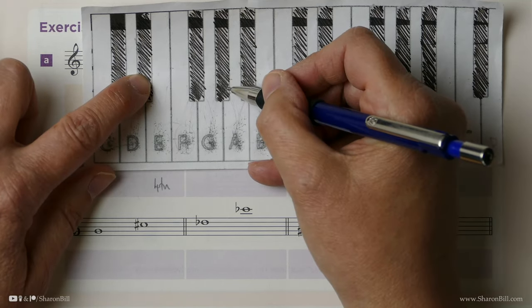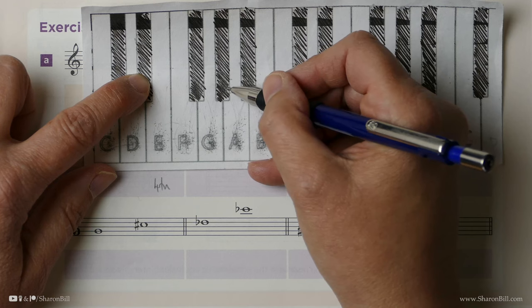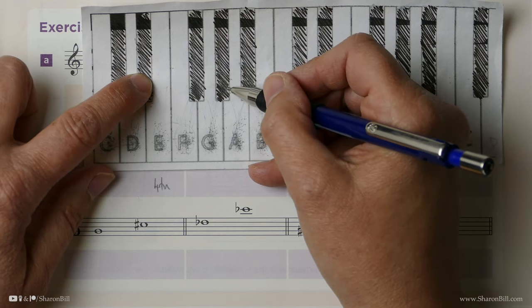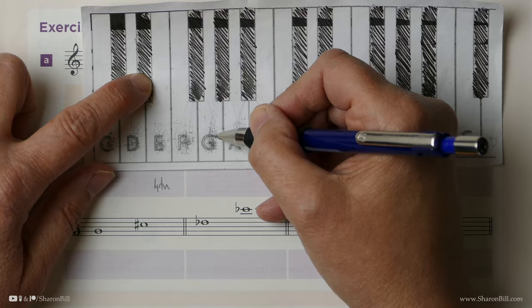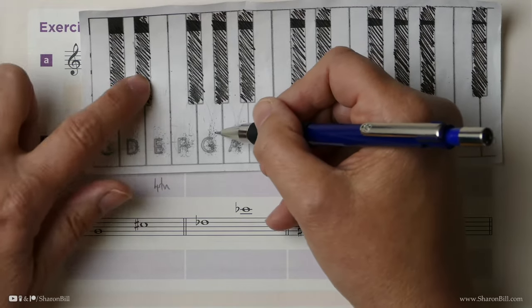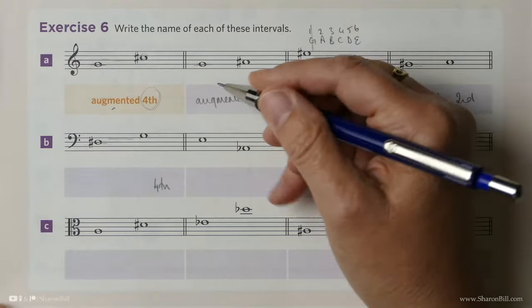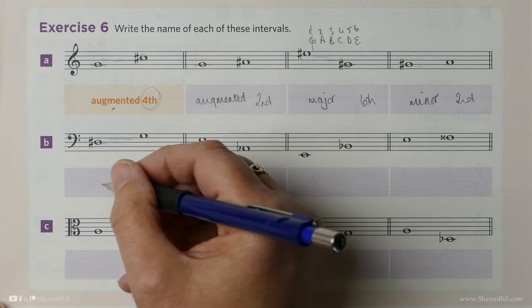We could also think, well, D sharp to G sharp is a perfect 4th, but it's not G sharp at the top. It's G natural, and so we've made it smaller. You can come at it either way. You've made it smaller one way or the other, and so we know from perfect, made smaller becomes diminished.